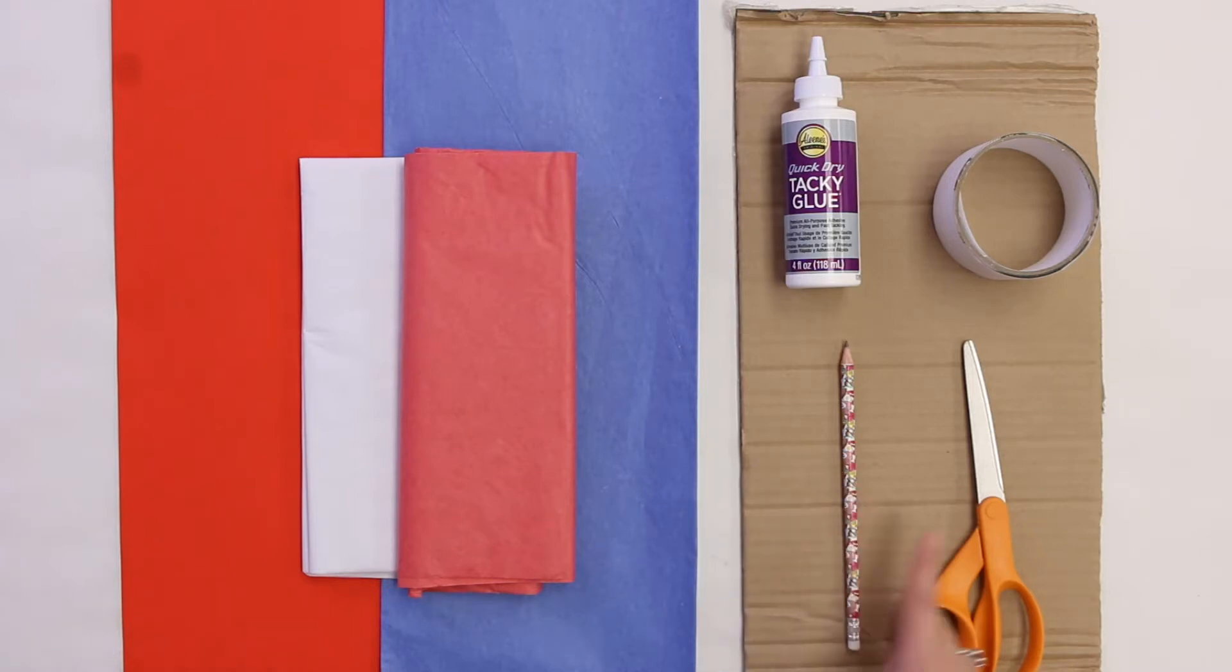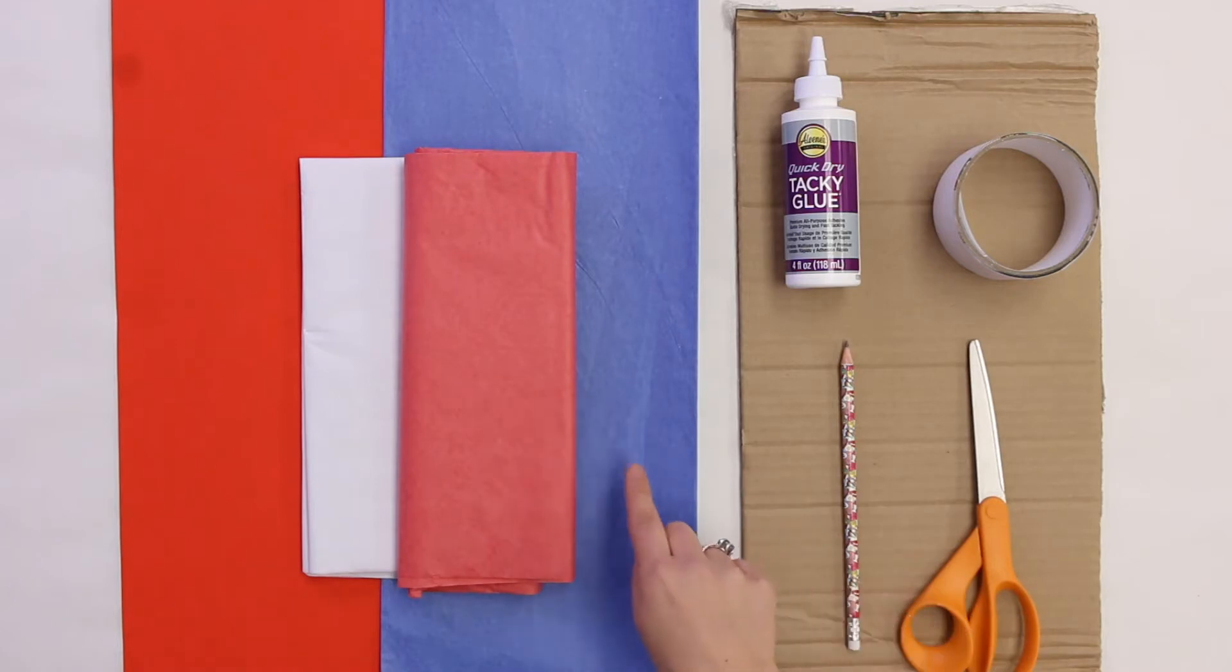You'll need a pencil, a scissor, blue, red, and white tissue paper, and poster board. I happen to have red, but you can really use any color because you're going to cover it up. All right, let's get started.